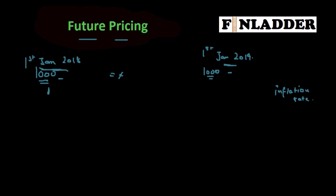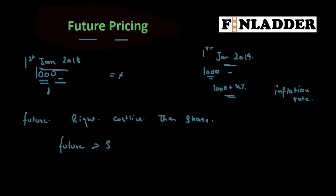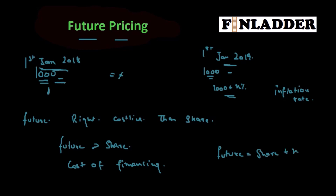A thousand rupees in 2018 would be worth 1000 plus X percent in 2019. Similarly, a future right now will be costlier than a share. This is primarily because of the cost of financing. So a future is equal to a share plus X percent, where X is the cost of financing, which is also called the risk-free rate, or R.